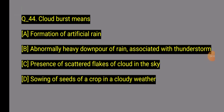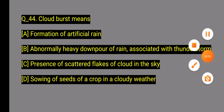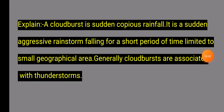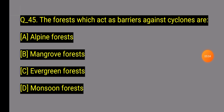Question 44: What does 'cloudburst' mean? Question 44 Explanation: A cloudburst is an extreme rainfall event — a sudden, aggressive rainstorm falling in a short period of time, limited to a small geographical area. Generally, cloudbursts are associated with thunderstorms.